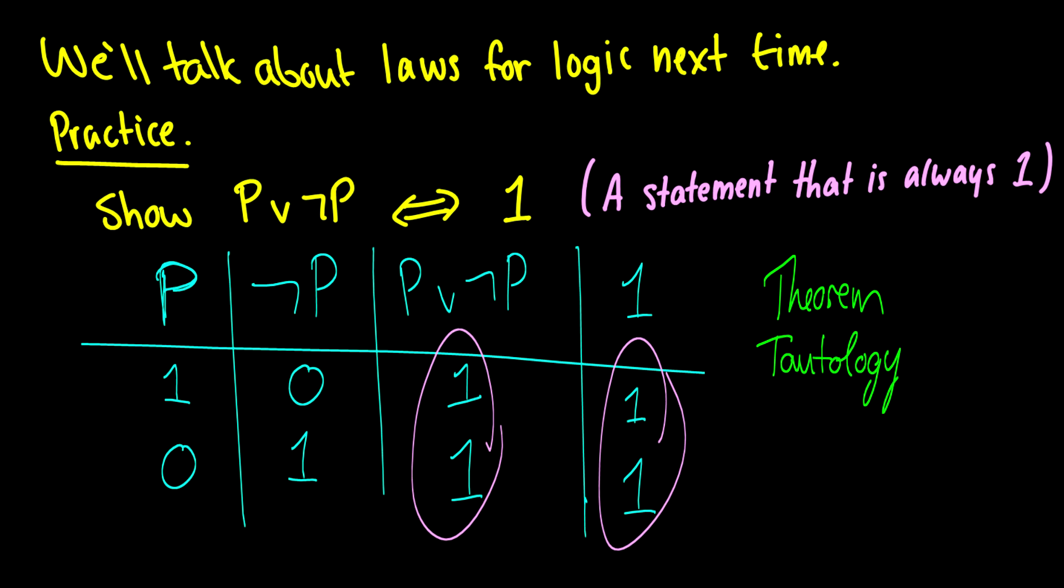For instance, I can say that two is in the integers or two is not in the integers. Well, yeah, it's either in or it's out. This is obvious of anything that we talk about. You are alive or you're not alive. It's pretty, pretty obvious and straightforward.